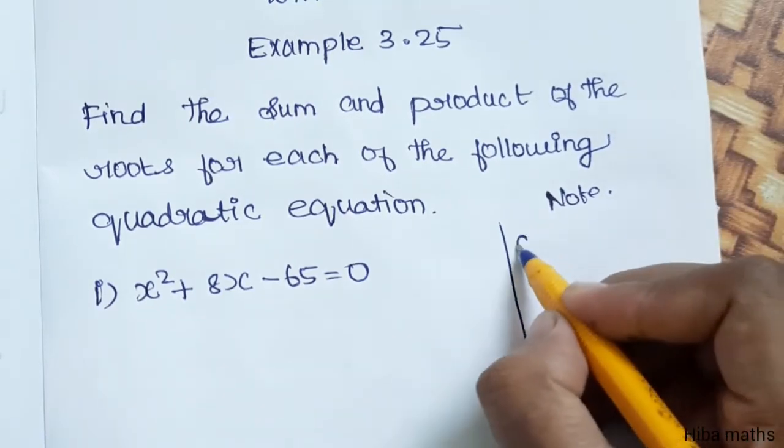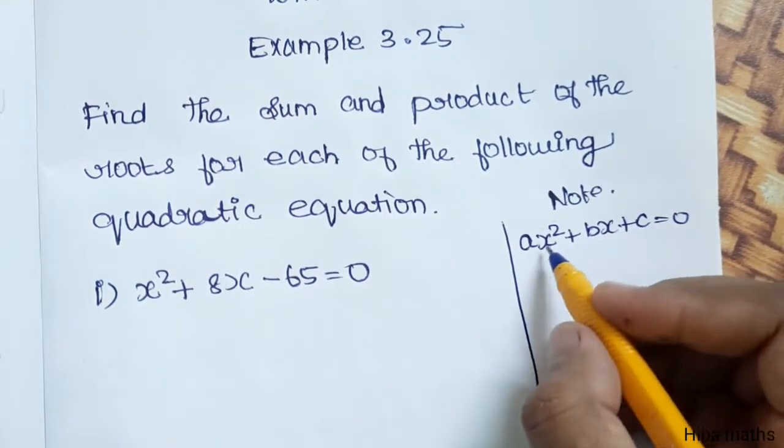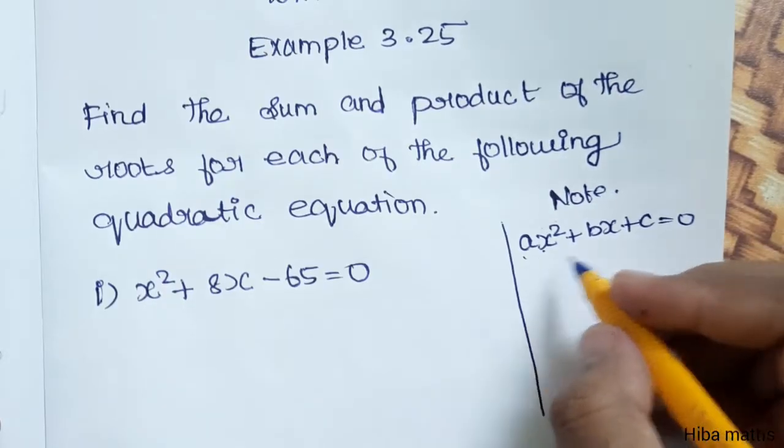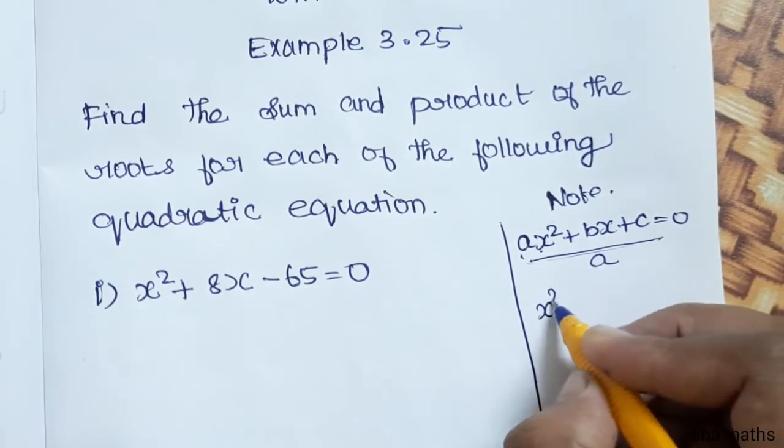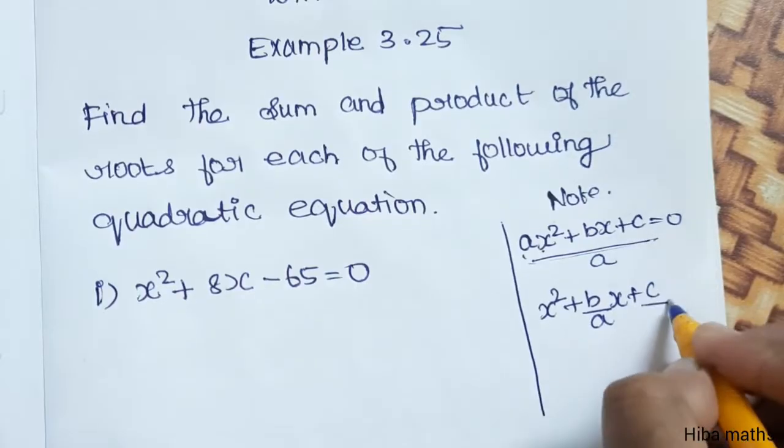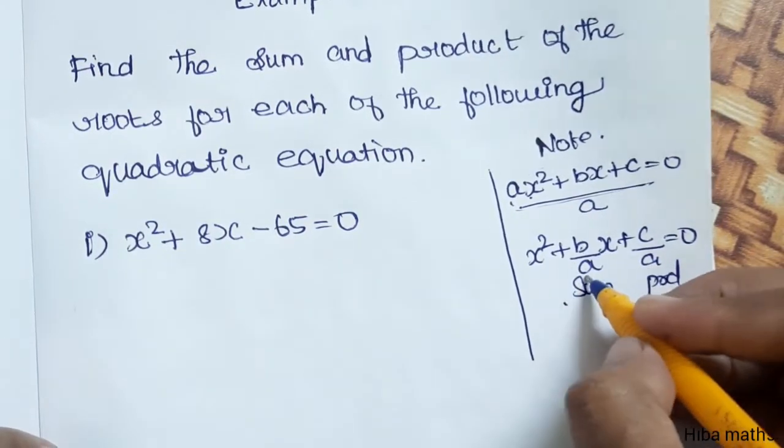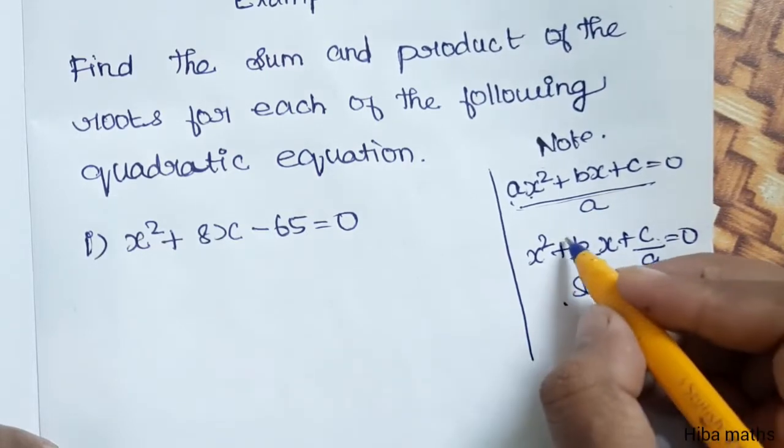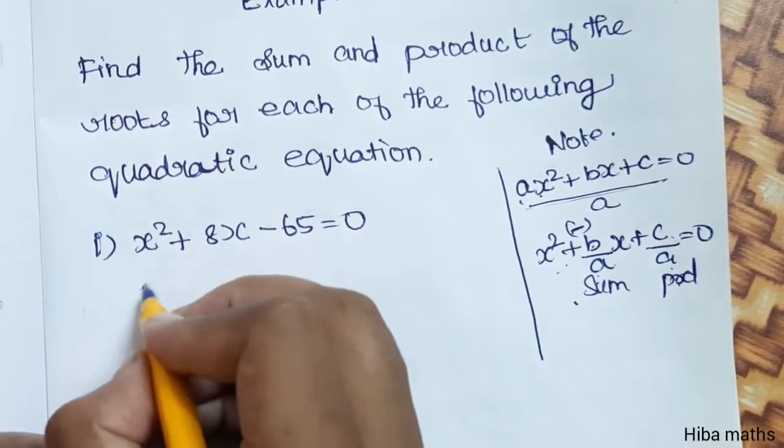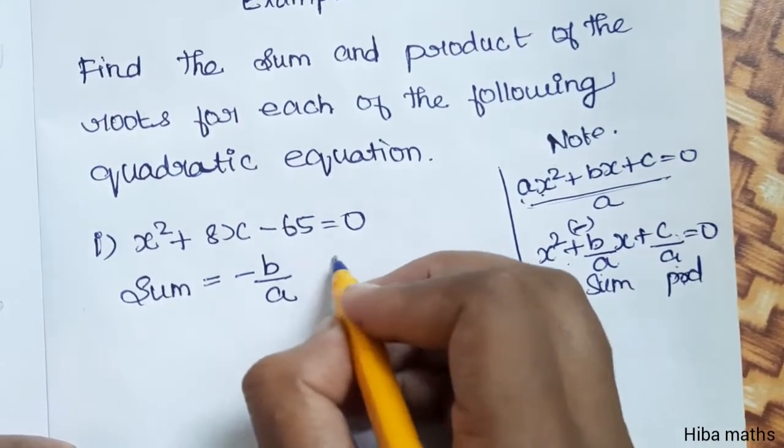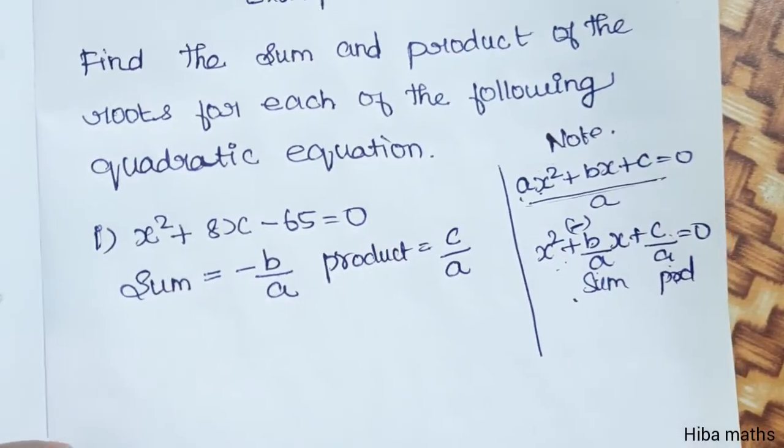So the quadratic equation is a x square plus b x plus c is equal to 0. In general form, x square plus b by a into x plus c by a is equal to 0. So sum is equal to minus b by a and product is equal to c by a.